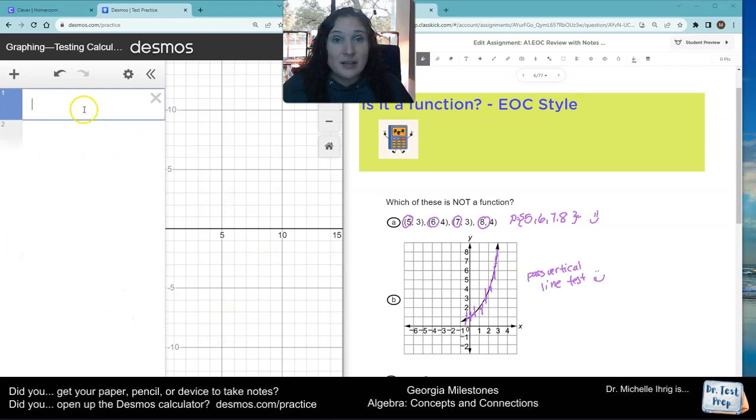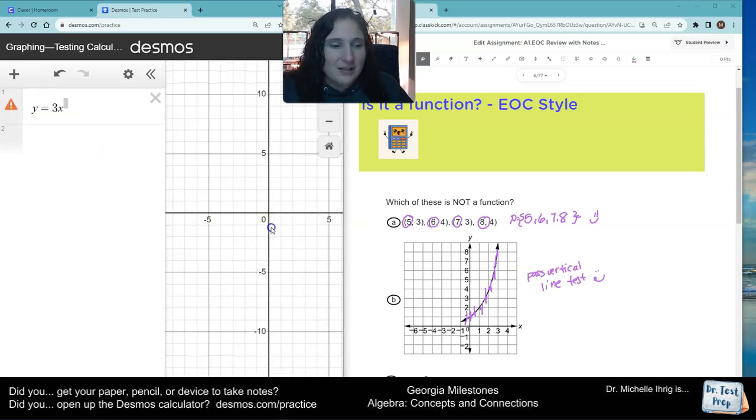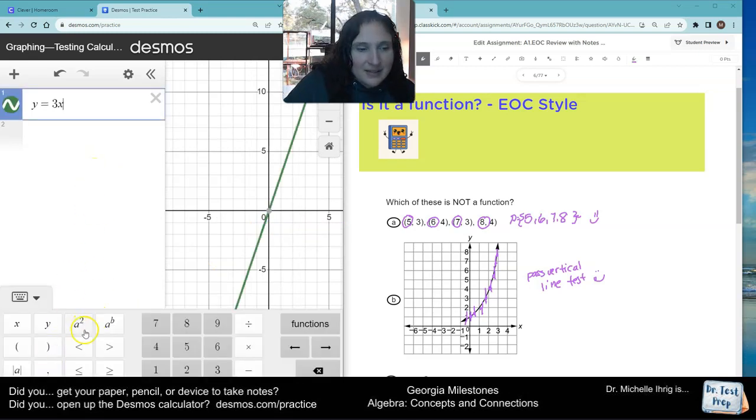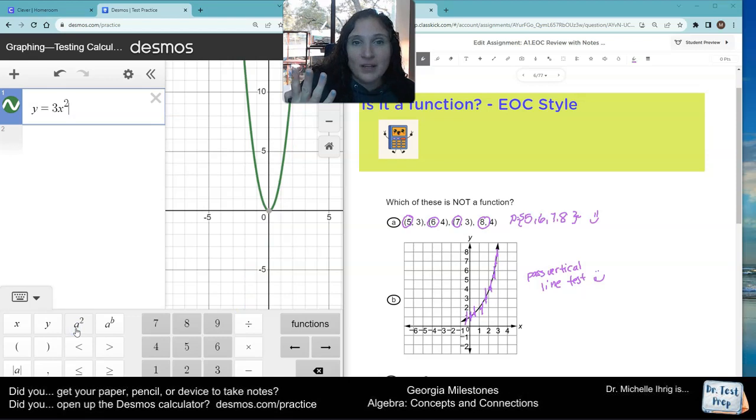But let's check letter C. All we do is y equals 3x. Now there's two ways that you can do squared. I like to use my keyboard shortcuts—I do shift and the number 6, and that lets me put in the 2. But let's say you don't like to do keyboard shortcuts. That's what this little keyboard thing on the bottom is. See how this says A², that 2 means that's where you're going to put in the squared, like that.